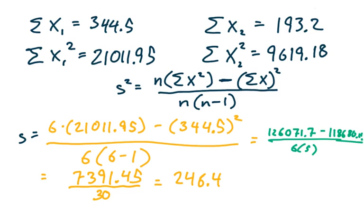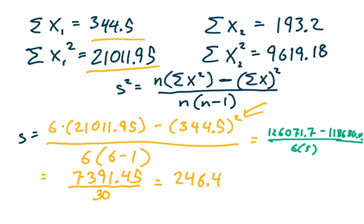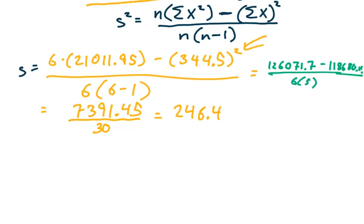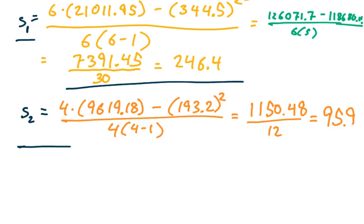Here we're simply substituting everything in. We had 6 for the sample size, 21,011.95 for the sum of squares, and 344.5 is the sum of all of the X values — and notice we square that — then dividing by 6 times (6 minus 1). You want to be careful here and either use an excessive amount of parentheses when plugging these into your calculator all in one shot, or go step by step. That gives us S₁². Similarly, we do the same computation for S₂².